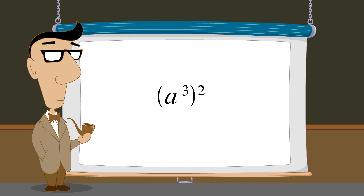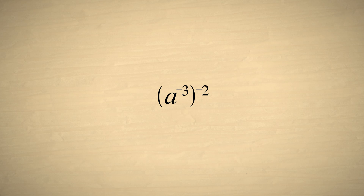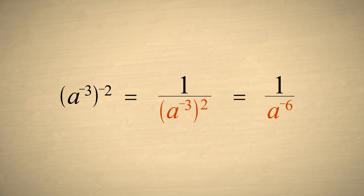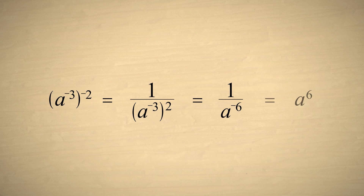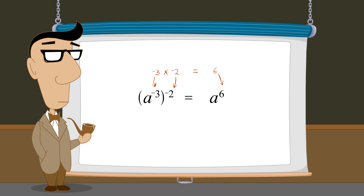Now let's see if our rule works when both exponents are negative. The term in parentheses has an exponent of negative two, so let's rewrite it as one over the same term with an exponent of positive two. In the previous example we found that if we square a to the negative three, we get a to the negative six. And one over a to the negative six is the same thing as a to the positive six. Since negative three times negative two is positive six, we have shown that our rule of multiplying exponents works whether the sign of either exponent is positive or negative.